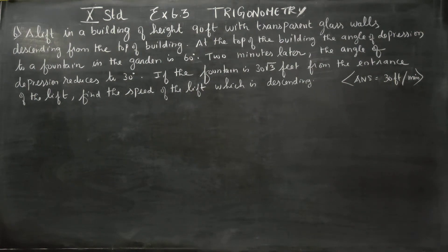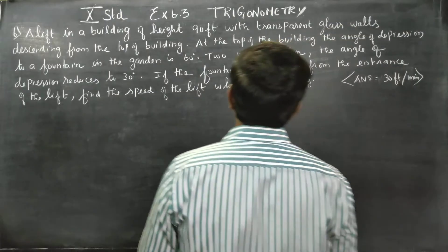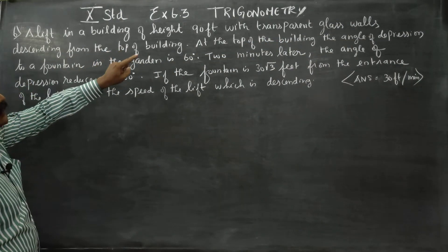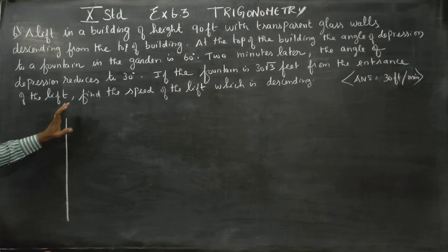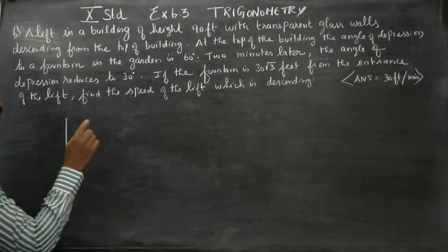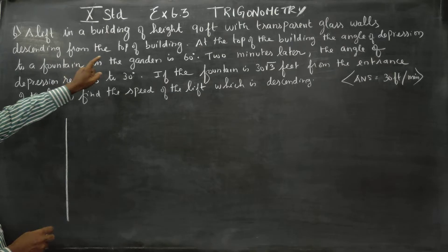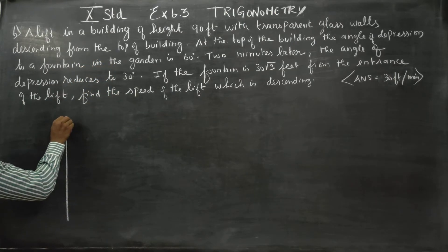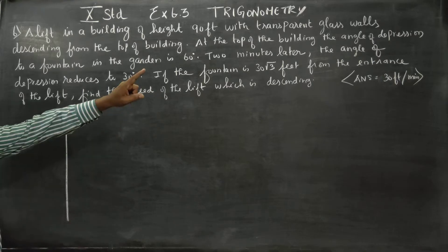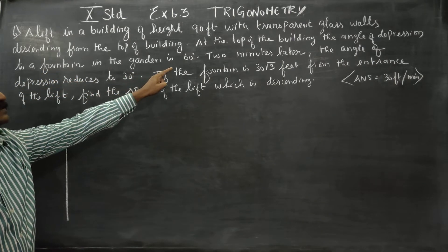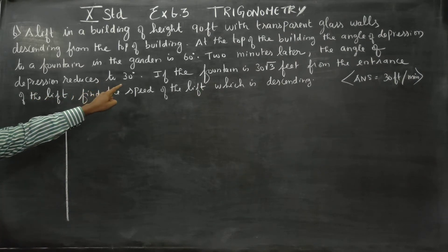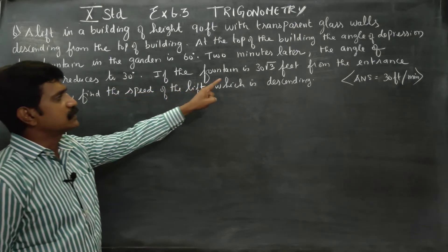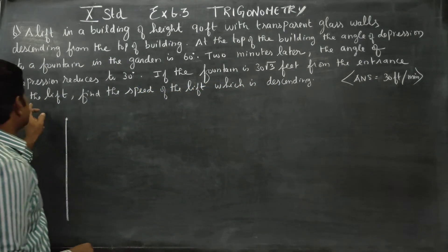Hello 10th Standard Students. In Exercise 6.3, a lift in a building of 90 feet with transparent glass walls is descending from the top of the building. At the top of the building, the angle of depression to the fountain is found to be 60 degrees. Two minutes later, the angle of depression reduces to 30 degrees. The fountain is 30 root 3 feet from the entrance of the lift.